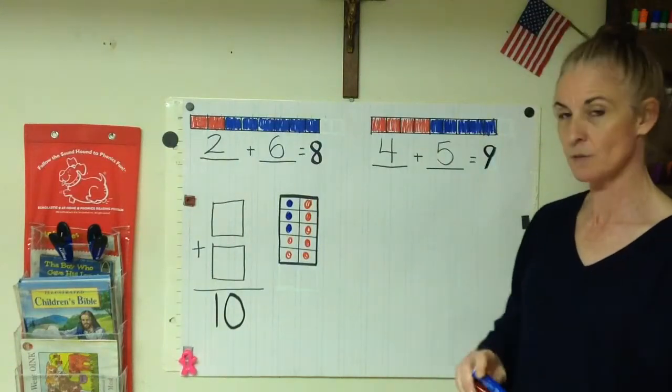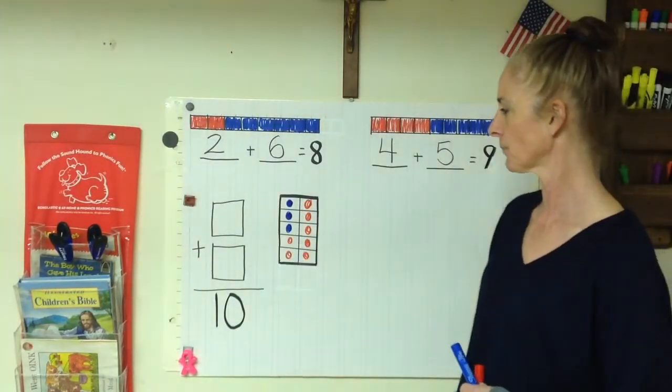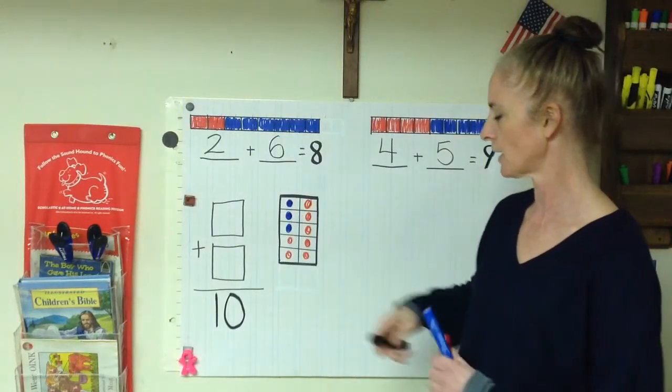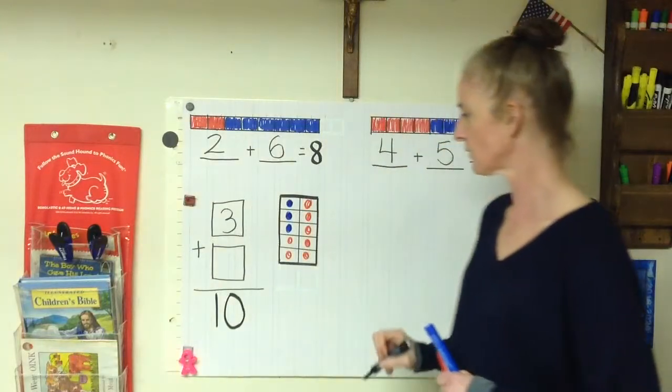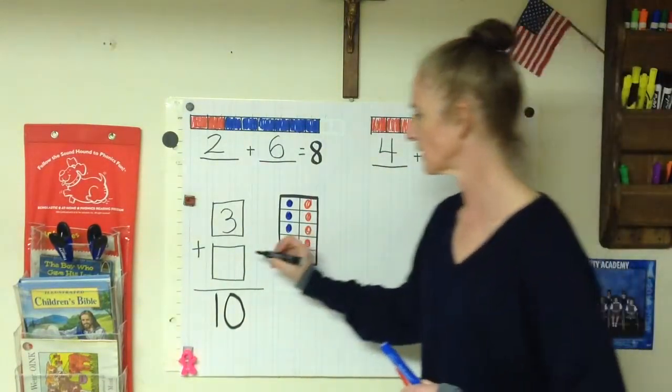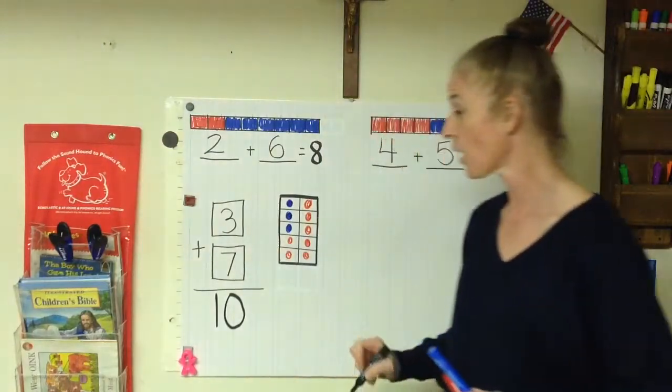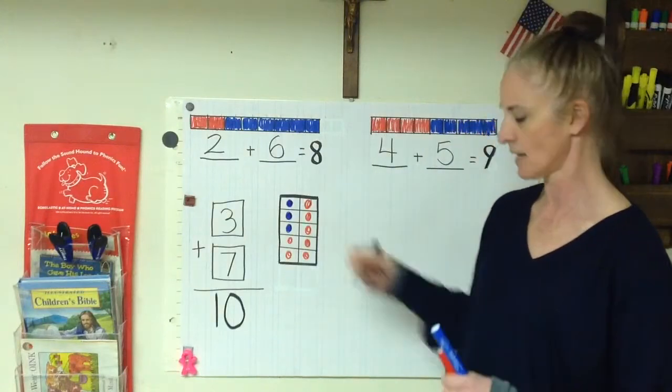Now let's write our number sentence using our addends. This is our data. Let's put it in. How many blues? One, two, three. Three. Plus, how many reds? We know this is, right, five, six, seven. Therefore, three plus seven equals ten. My sum is ten.